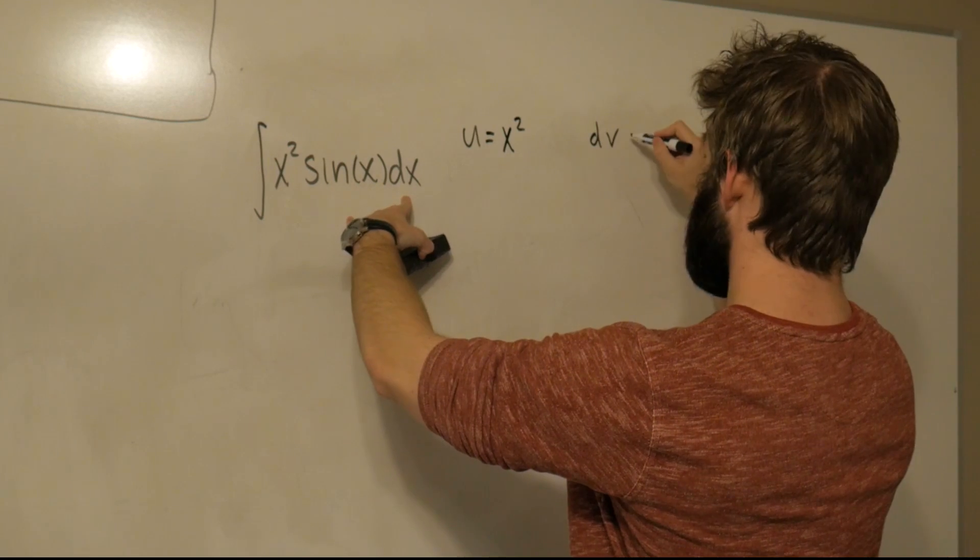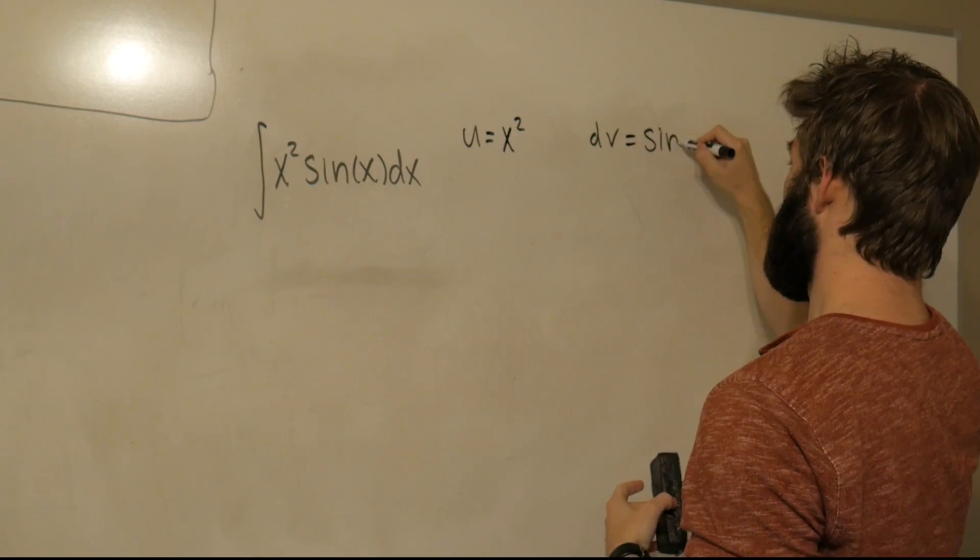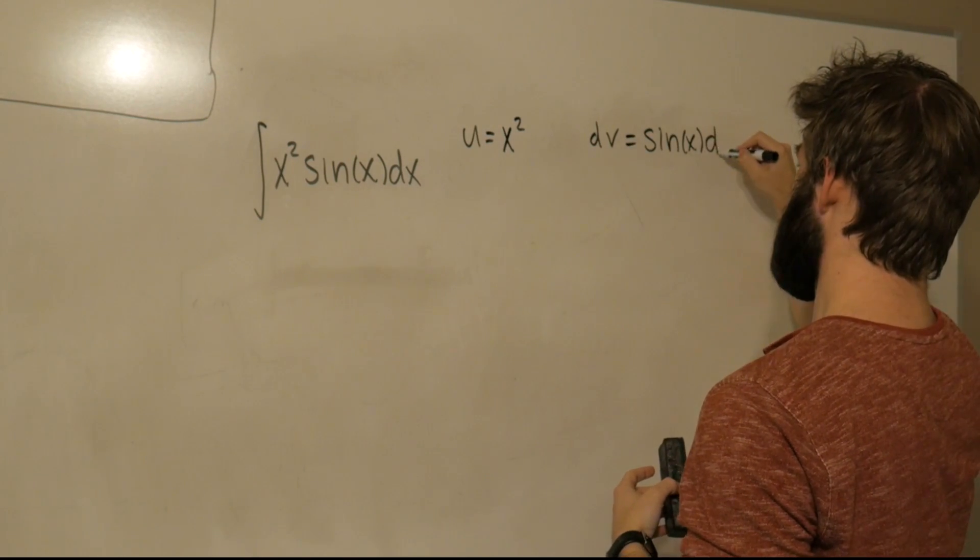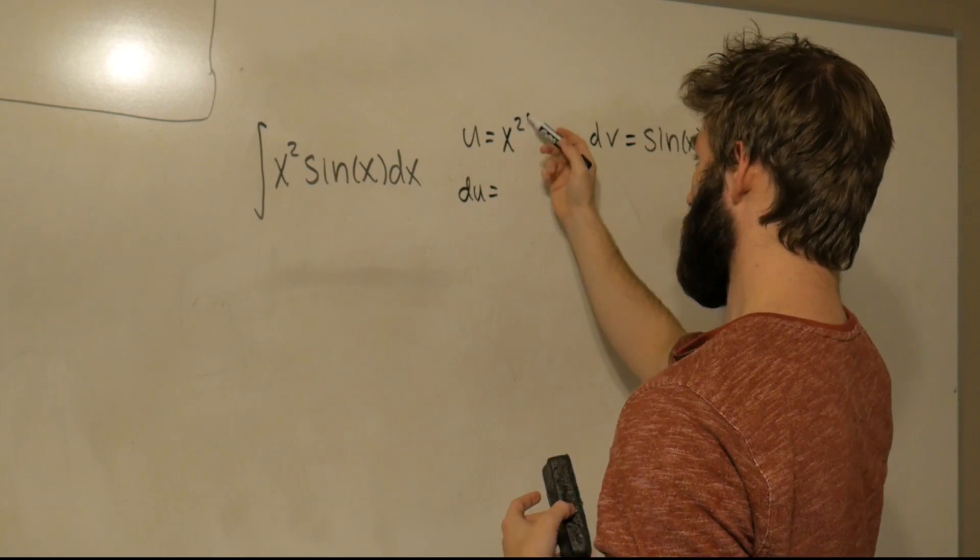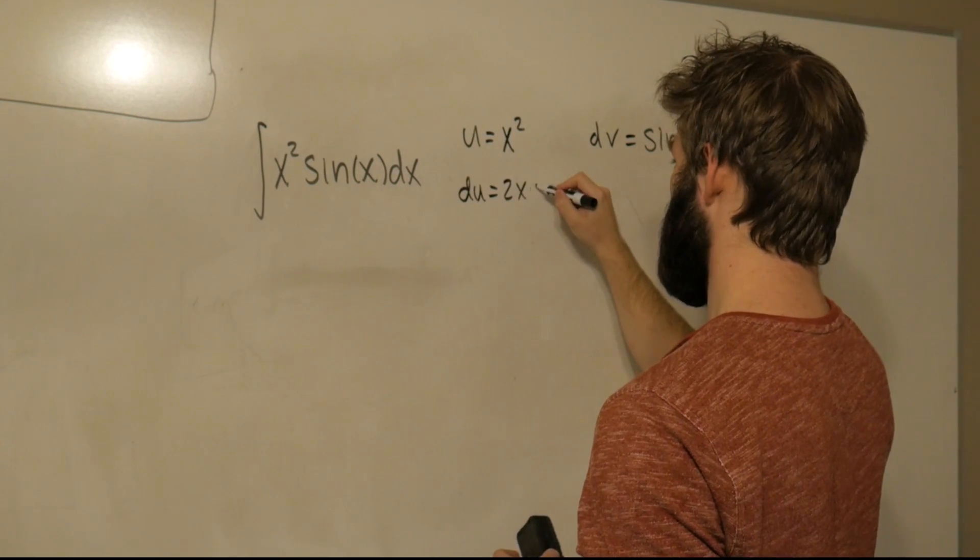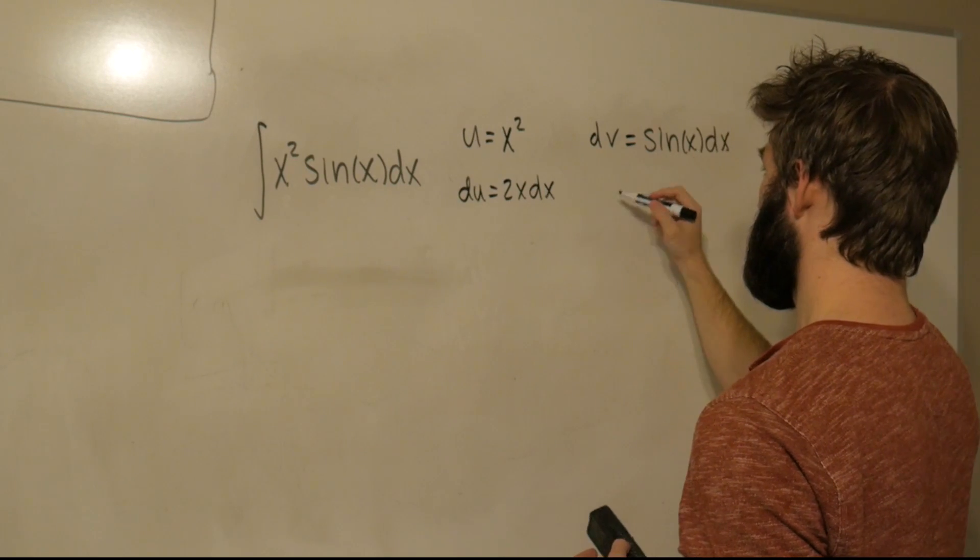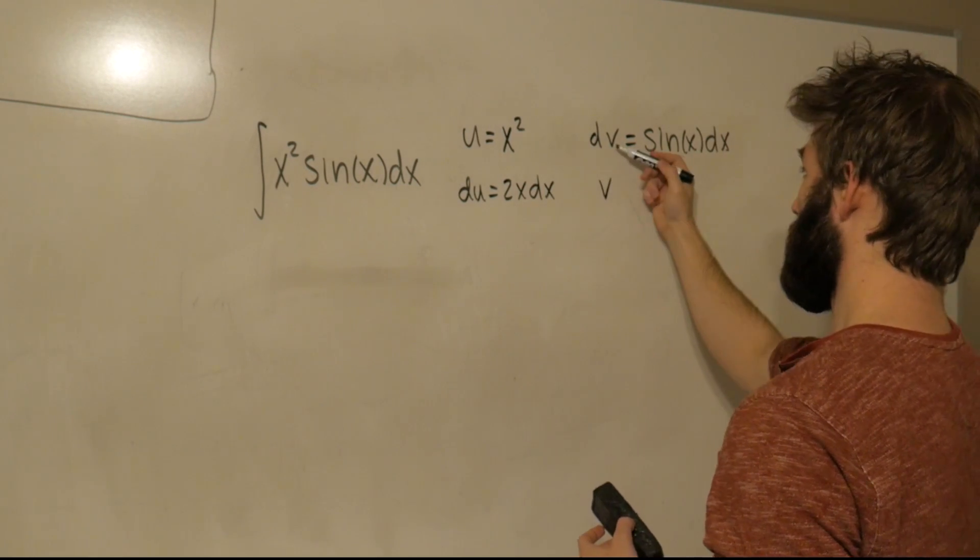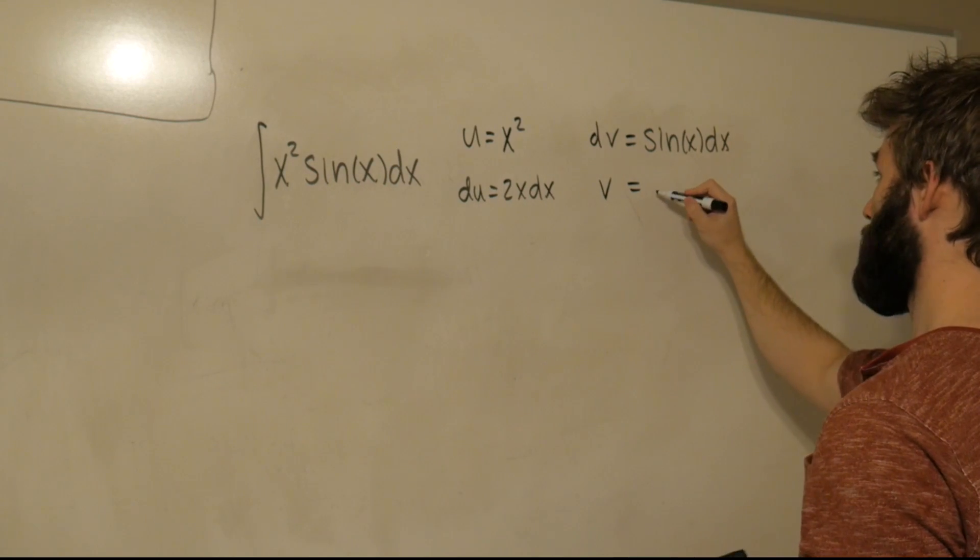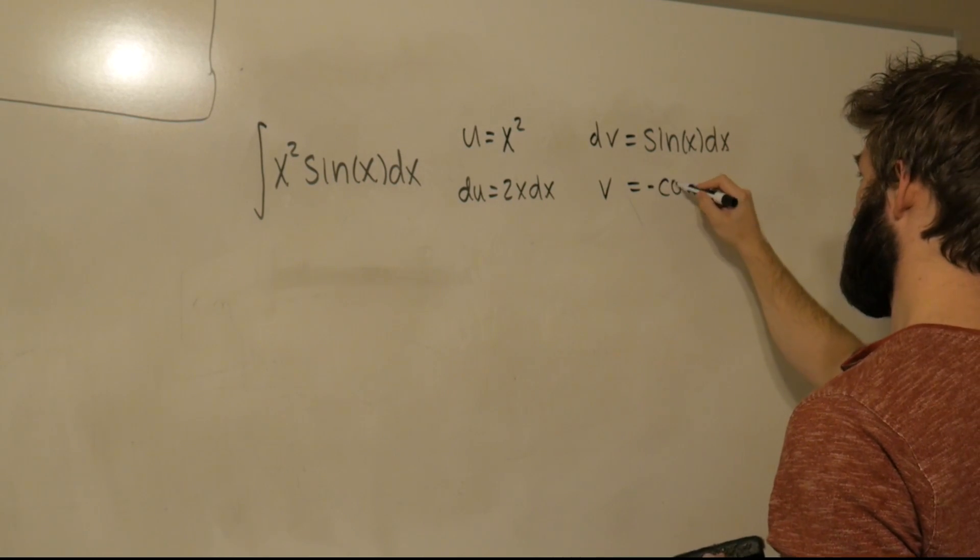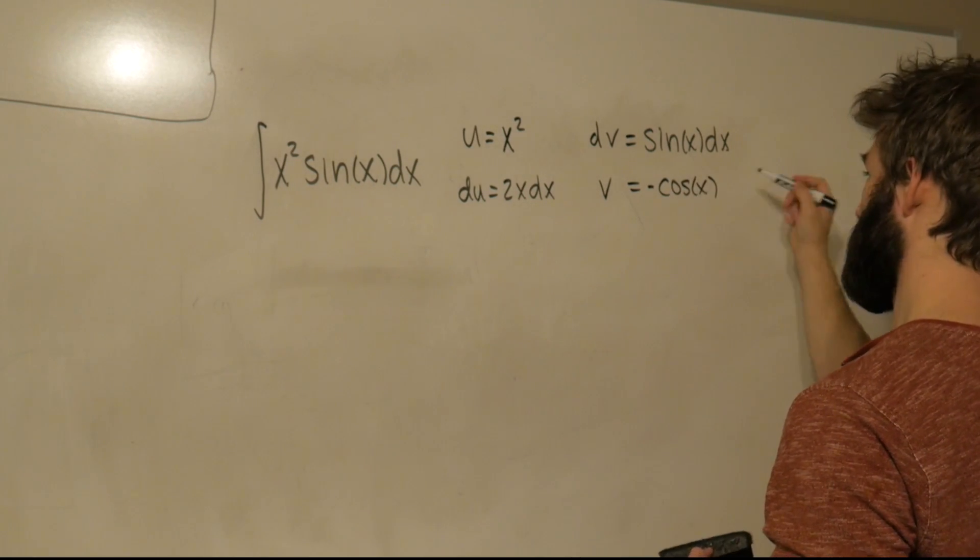And then we're going to let dv equal sin(x) dx. So then du, well the derivative of x² is just 2x dx. And then v, because we're going to go from dv to v, is going to be the integral of sin(x) dx, which is just going to be -cos(x). Cool.